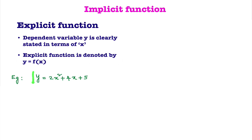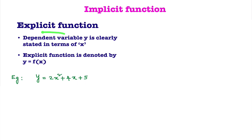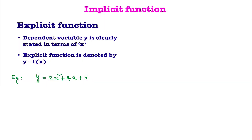Consider y equal to 2x squared plus 4x plus 5. This is an example of an explicit function. Here, if I take x equal to 1, based on that only we will get the y value. In this equation, x is the independent variable. Y is the dependent variable because y value depends upon x value.